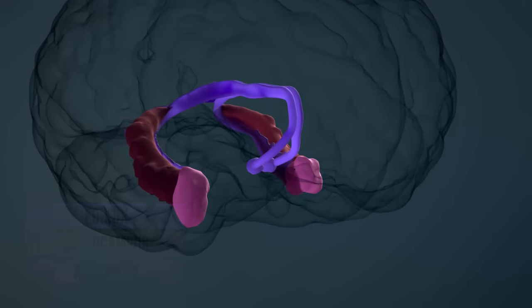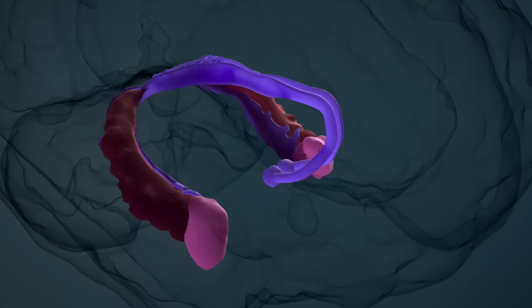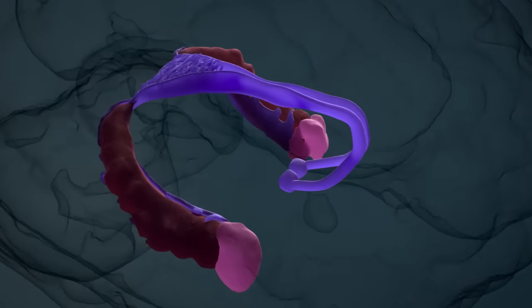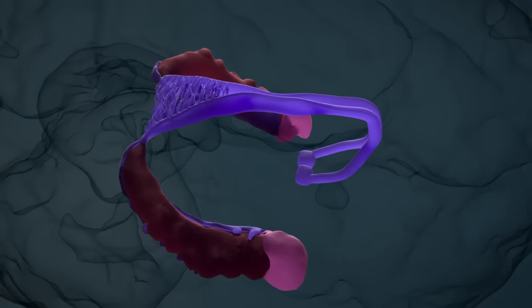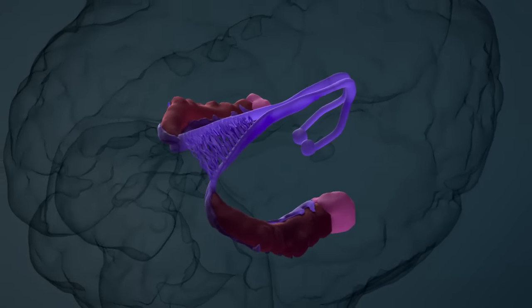The hippocampus is responsible for memory formation. If the hippocampus is removed or destroyed, people are unable to store new memories. The amygdala is used in particular to store information about dangers.